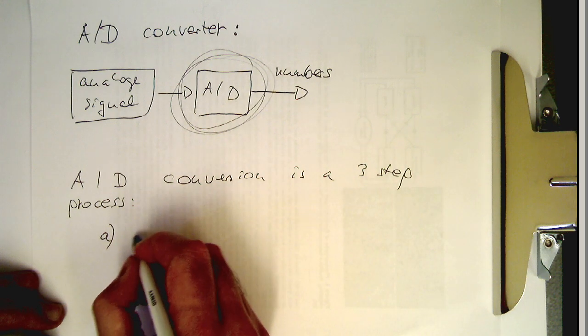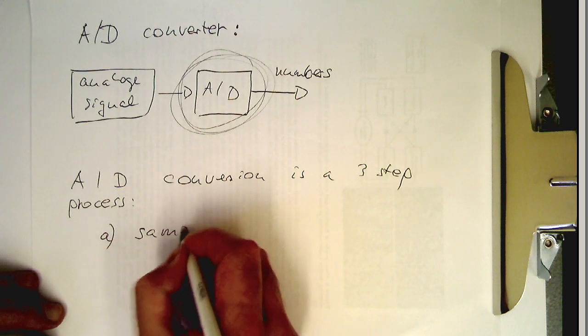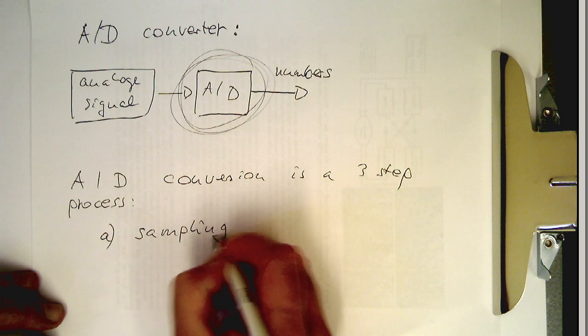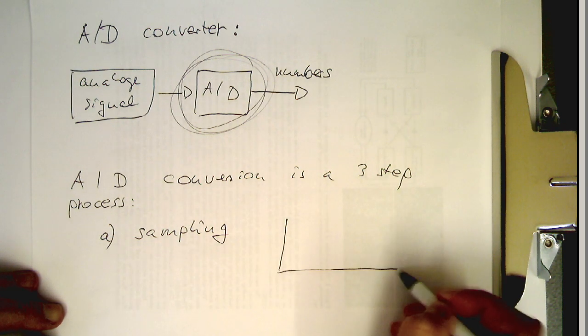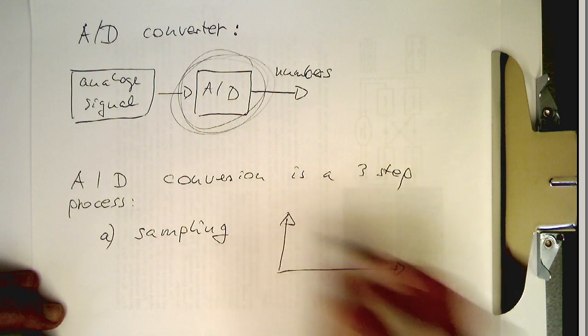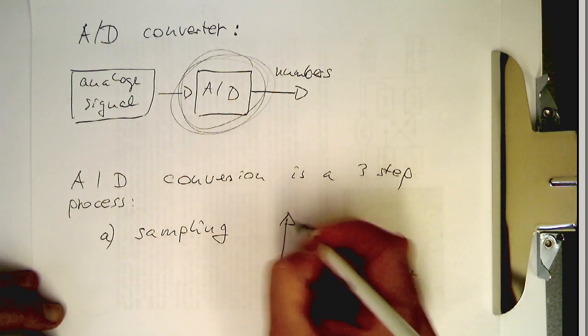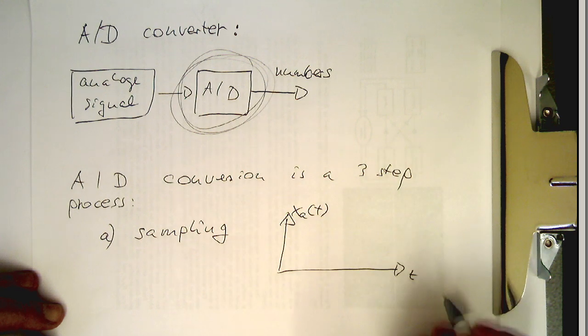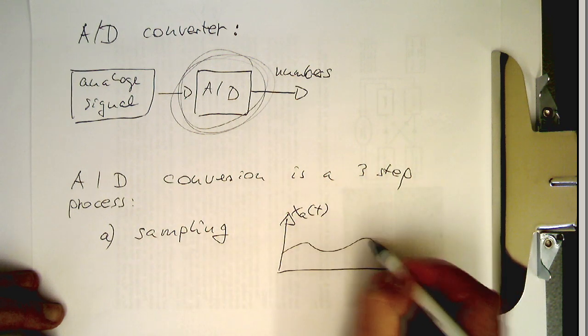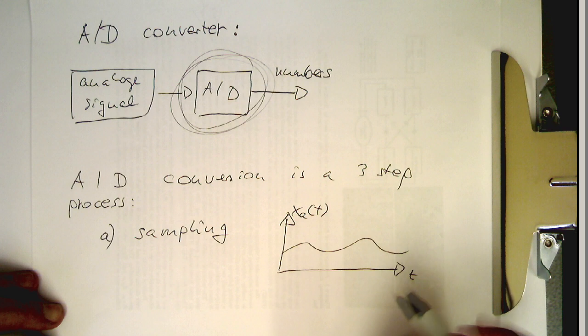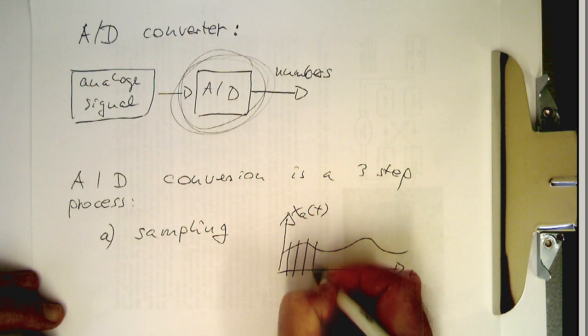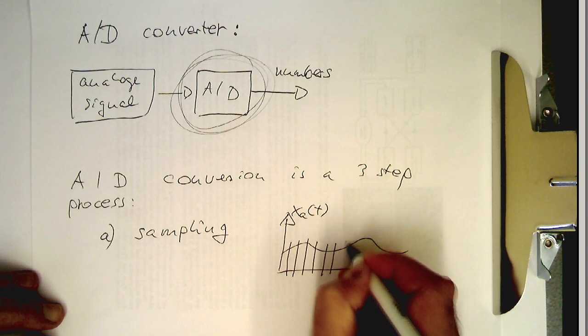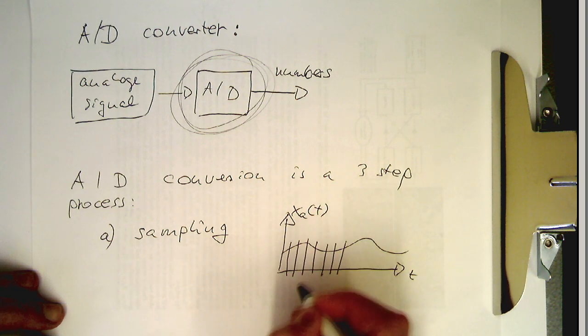So the first step is sampling. So what does it mean? Let's draw an analog signal. So T and we've got the XA of T here, and that's our analog signal. So the sampling is looking just at these moments in time here and looking which value we are getting out of this here.